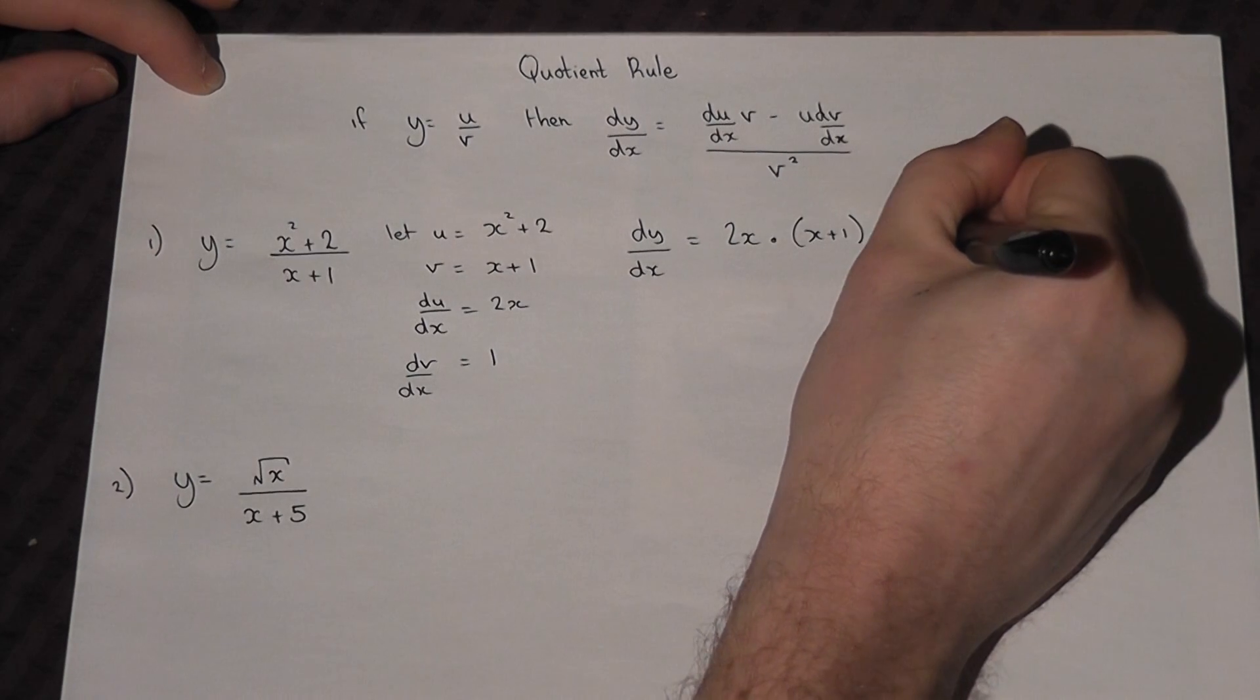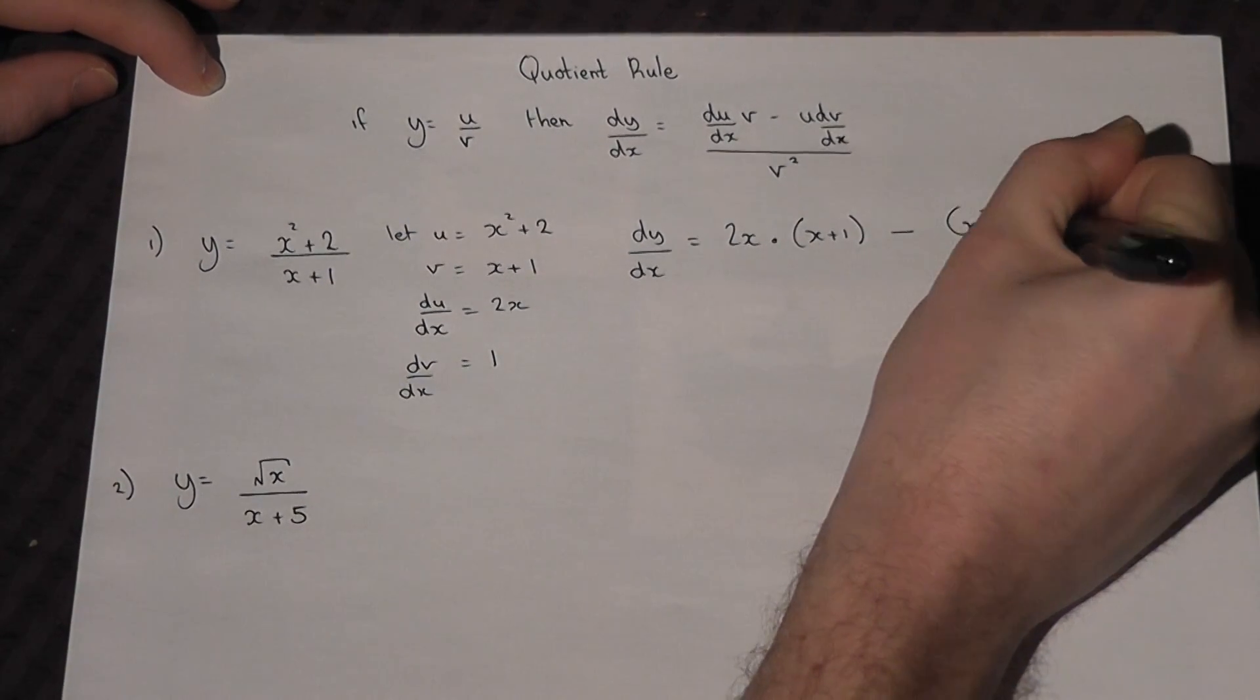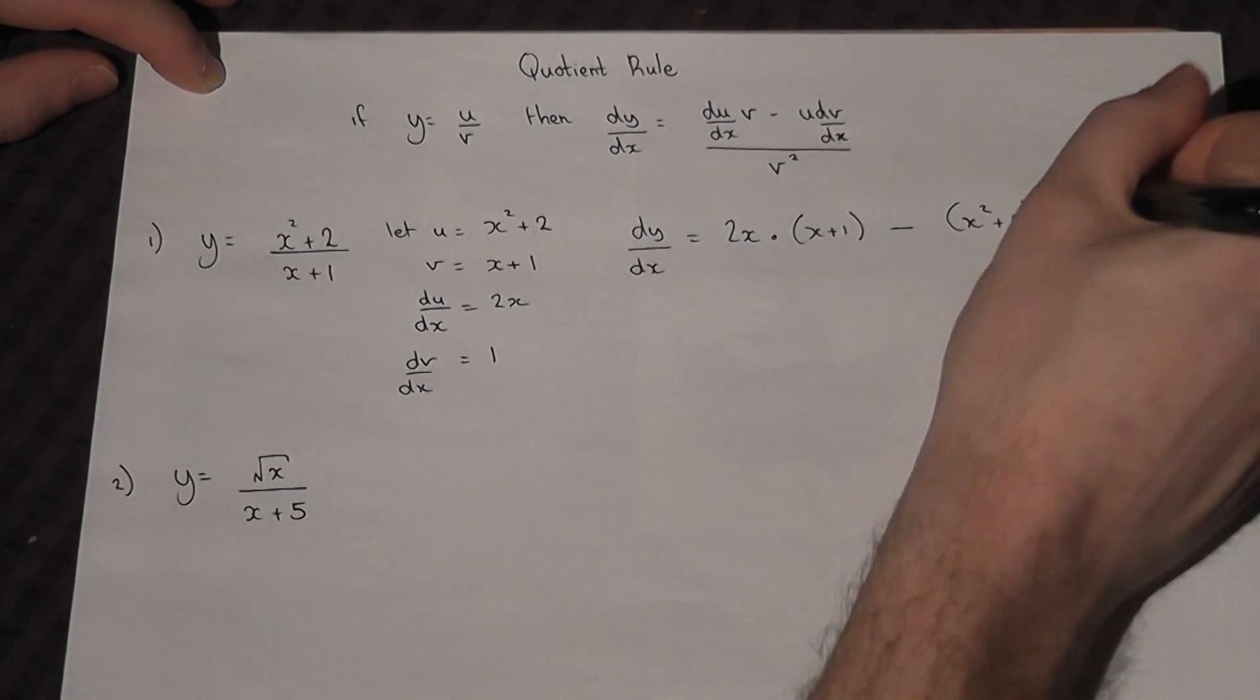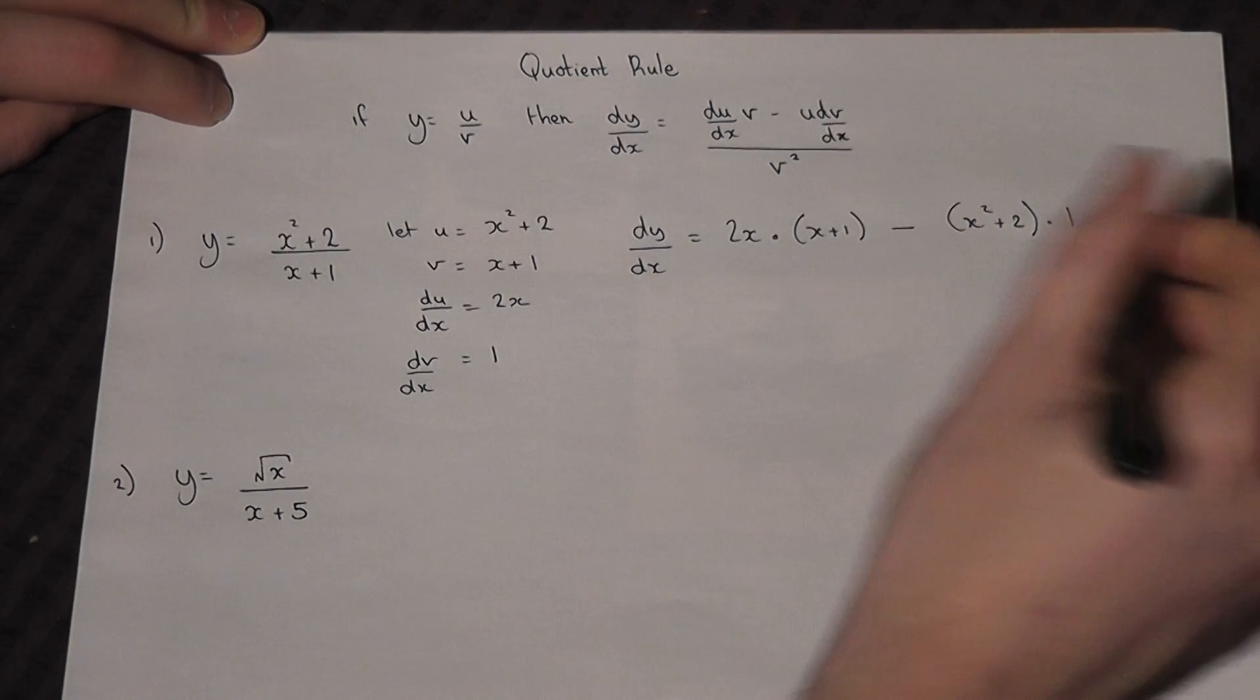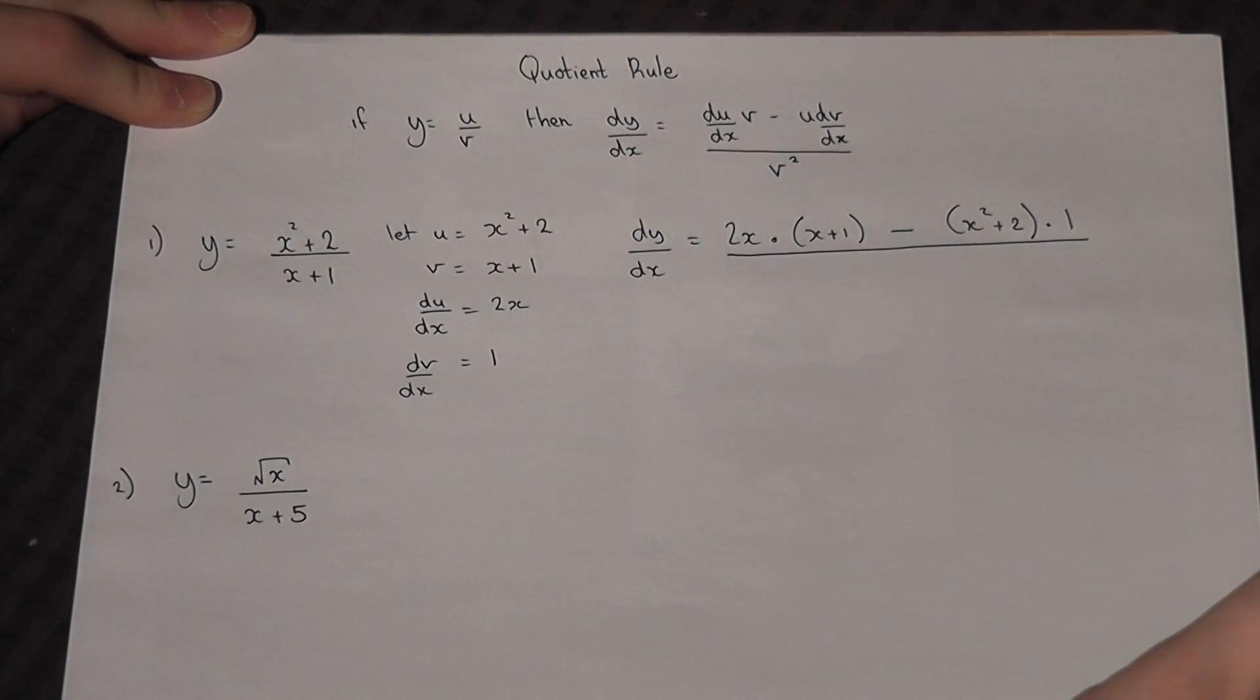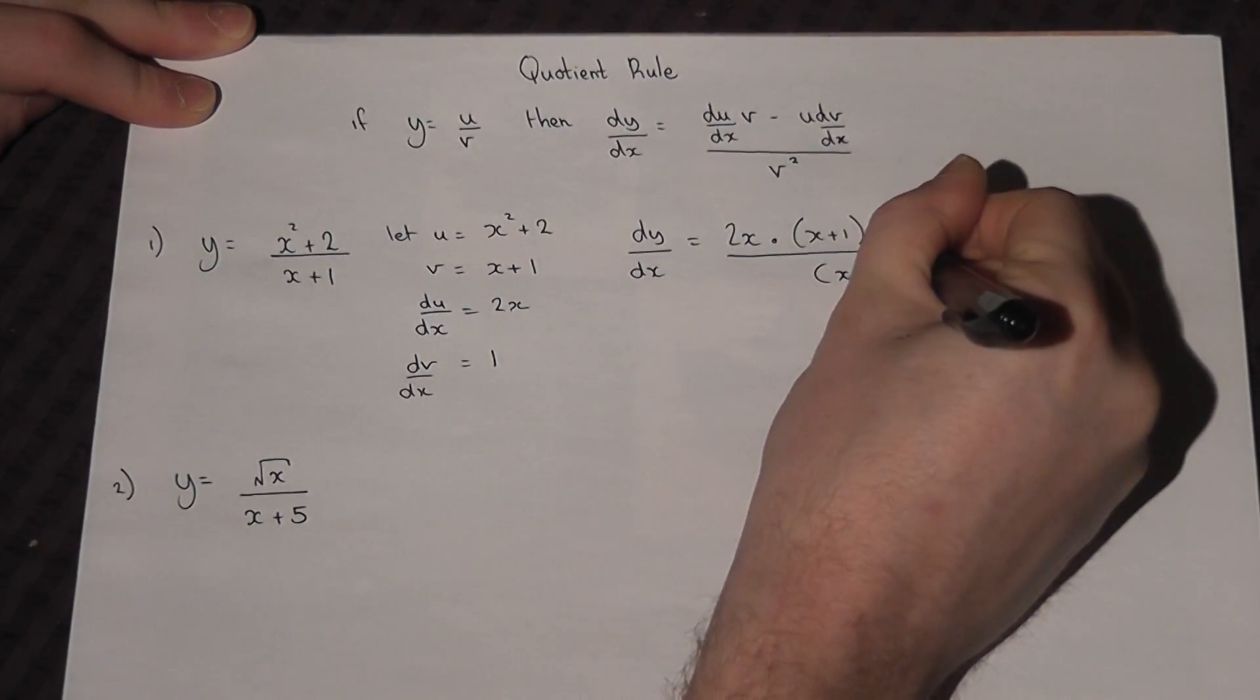Take away, it's always take away in the Quotient Rule, u was x squared plus 2, and dv by dx was 1. And this is all over v squared, which is x plus 1 squared.